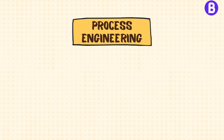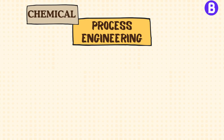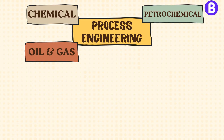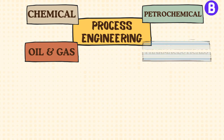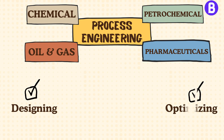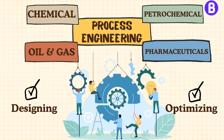Process engineering plays a pivotal role in industries such as chemical, oil and gas, petrochemical, and pharmaceuticals. It encompasses designing and optimizing processes that convert raw materials into valuable products.